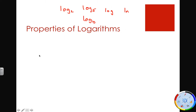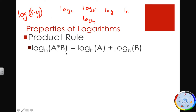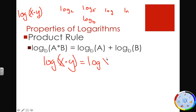Our first property is called the product rule. This is the logarithm of a product — something like log of x times y. The property says if I have the log of a product, I can rewrite it as the sum of the two separate logs. So log of x times y can be rewritten as log of x plus log of y.